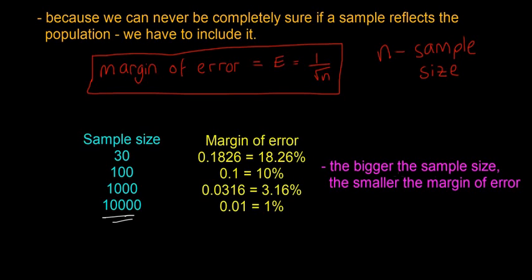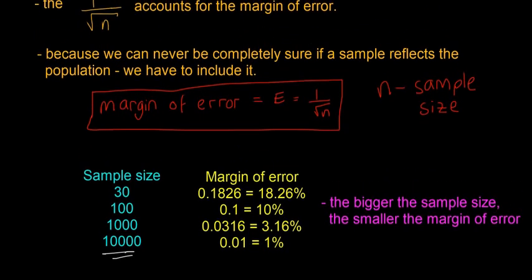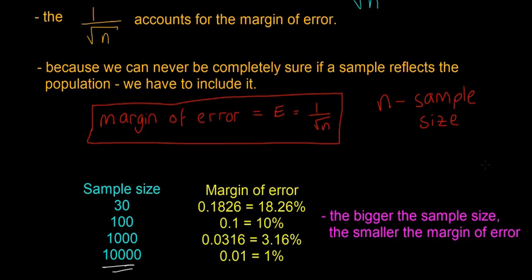So as you can see, as the sample size gets bigger, the margin of error gets smaller. And this makes sense, because if we only ask two people a question and try to say what the rest of the population thinks because of that,